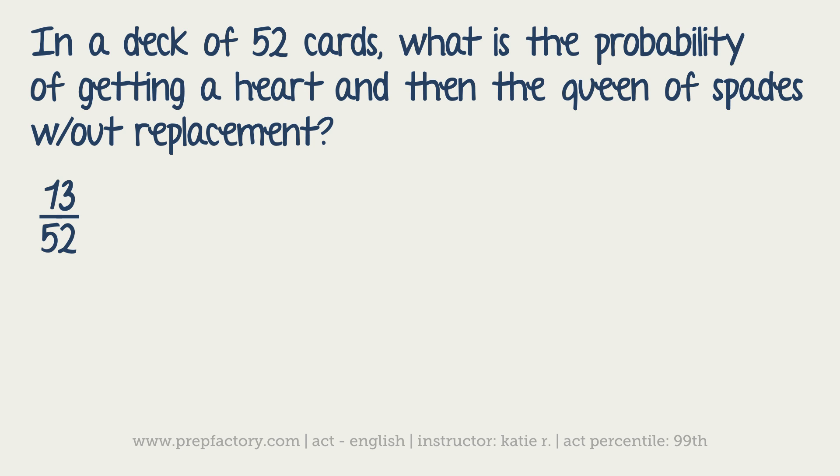And then you're going to multiply that by the probability of getting the queen of spades. So there is only one queen of spades in a deck of 52 cards. And then the bottom isn't going to be 52. It's going to be 51 because I already took away one card, which was one of the hearts. We don't know which one. So then all you have to do is just multiply these together. So 1 times 13 is 13. And then 52 times 51 would be 2,652. Since the top is a prime, that is as simple as that answer gets.